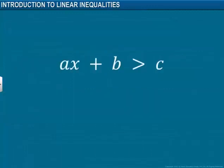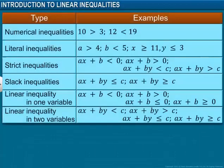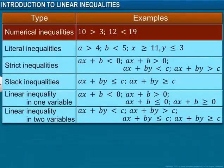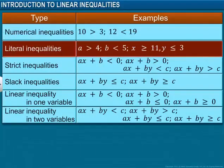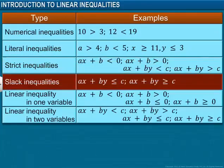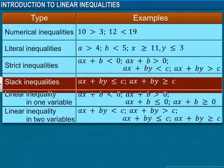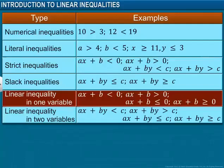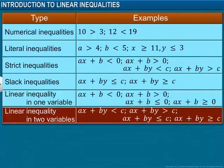Shown here is a linear inequality in one variable. Here the term 'one variable' represents the variable x in the inequality. There exist different types of inequalities, such as numerical inequalities, literal inequalities, strict inequalities, slack inequalities, linear inequality in one variable, linear inequality in two variables, etc.